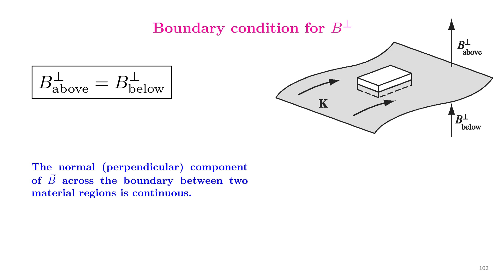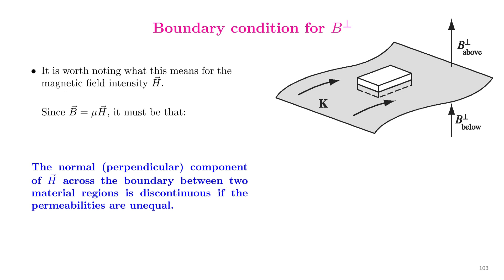We conclude that the normal or perpendicular component of the magnetic field across the boundary between two material regions is continuous. Instead of the magnetic flux density B, if we use the magnetic field intensity H, which are related as B equal to μH, we have the boundary condition in terms of H: the normal or perpendicular component of H across the boundary between two material regions is discontinuous if the permeabilities are unequal.